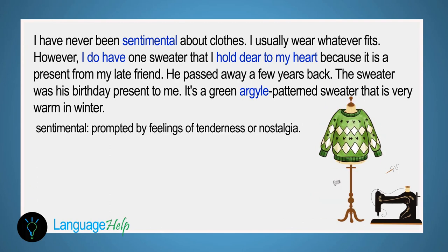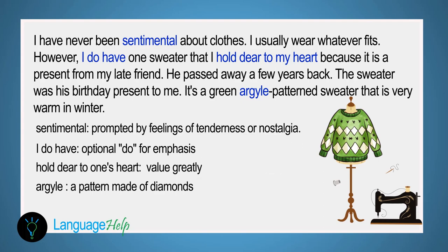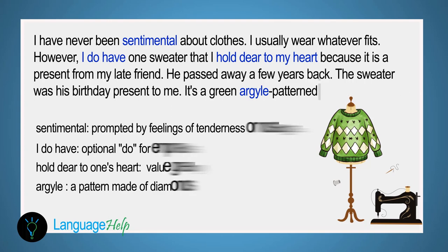The cue is: what is the item of clothing? Our answer is: I've never been sentimental about clothes. I usually wear whatever fits. However, I do have one sweater that I hold dear to my heart, because it's a present from my late friend. He passed away a few years back. The sweater was his birthday present to me. It's a green argyle pattern sweater that is very warm in winter. When you feel sentimental, you are prompted by feelings of tenderness and nostalgia. 'I do have' is a structure that shows emphasis — it includes an optional 'do'. To 'hold dear to one's heart' is to value something greatly. Argyle is a pattern made of diamonds.